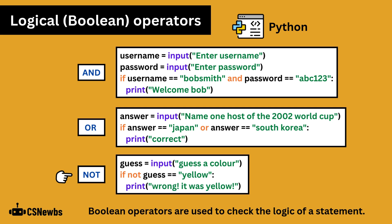Finally, the NOT operator reverses the condition, so if not guess equals yellow is the same as if not equal to yellow.